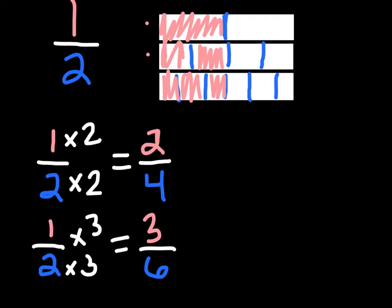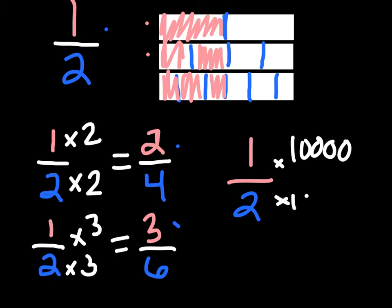Just to recap: you take your fraction and multiply by a common factor — same number on the top and bottom — and then you get your equivalent fraction. Three sixths is equivalent to two fourths, which is equivalent to one half. We could go on and on. In fact, we could multiply by 10,000 on the top and bottom and we'd still get an equivalent fraction.